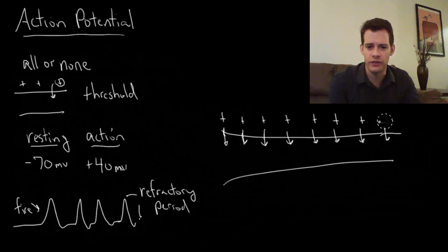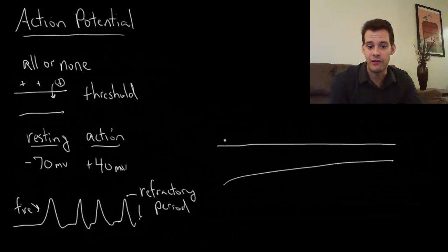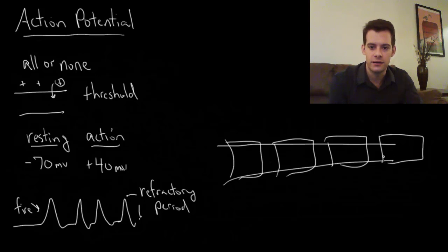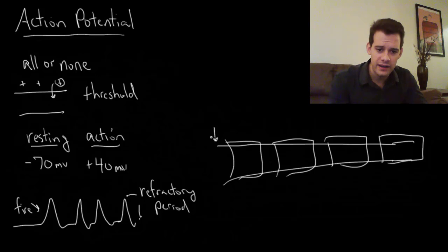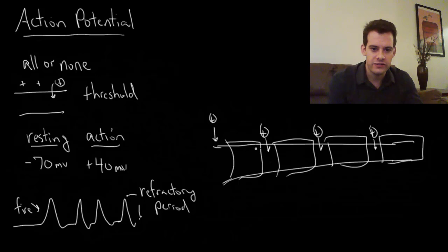Myelin helps make neurons more efficient — it allows axons to send a message more quickly. If we wrap the axon with myelin, when the channels open and a positive ion moves inside, that triggers the next section to open, then that triggers the next section, and then the next — so we don't have to trigger ion movement all the way along every part of the axon.